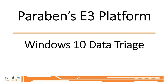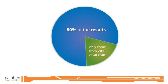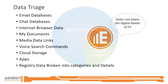Welcome to Paraben's e3 platform Windows 10 data triage. When looking at large volumes of data that can exist in an examination, it's valuable to be able to focus on specific areas that might yield the highest results quickly. Typically, the most valuable data comes from 20% of the overall volume of the data we process. The data triage function of the e3 platform focuses on that 20% of the data that might be the most valuable for quick review.